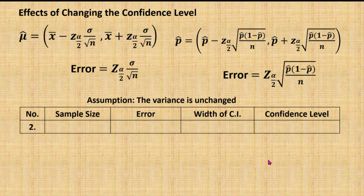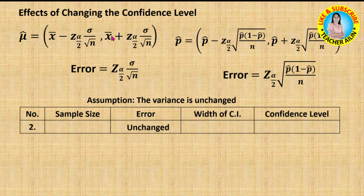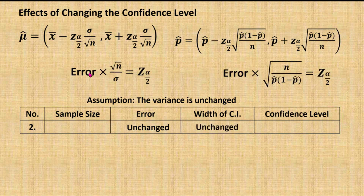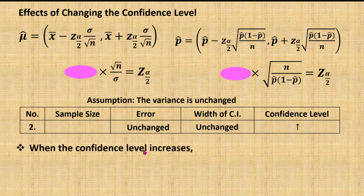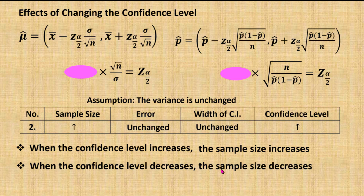If I wish to keep the estimation error unchanged, then the width of the confidence interval is also unchanged. When I rearrange the equation and ignore the estimation error, increasing the confidence level means the z value also increases. So when the z value increases, the sample size needs to be increased. Similarly, when the confidence level decreases, the sample size needs to be decreased in order to keep the error unchanged.